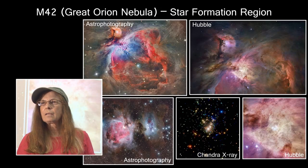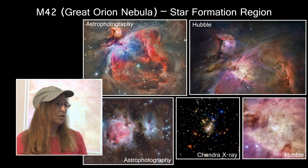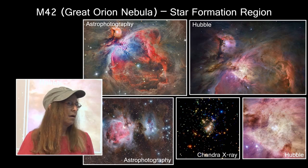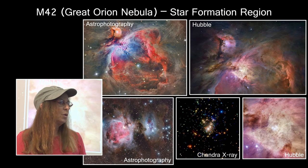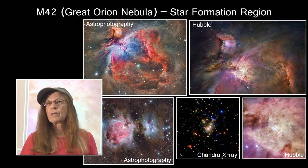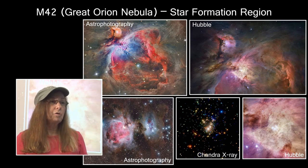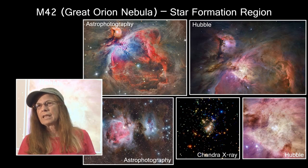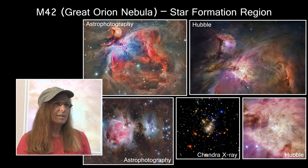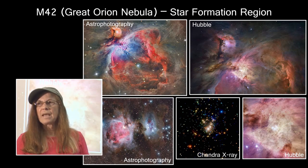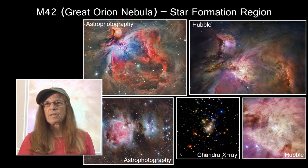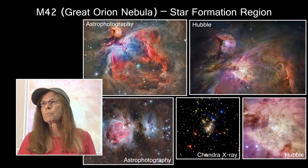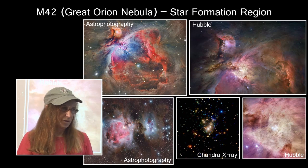You can see M42 quite well, a lot of it even in the optical. Here are some multi-wavelength images of M42, and two of them are astrophotography. You can take incredibly detailed, highly resolved images of a lot of these objects from ground-based telescopes with the adaptive optics that we have and increasingly sophisticated analysis software tools.